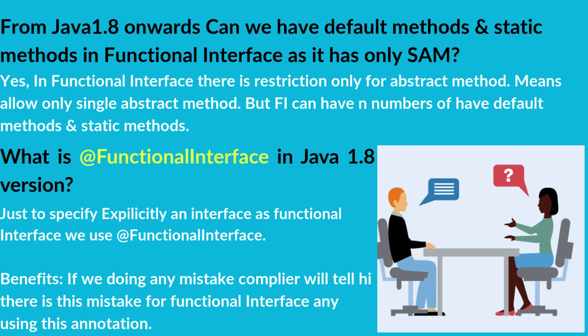From Java 1.8 onwards, can we have default methods and static methods in a functional interface, even though it has only one SAM? Yes — in a functional interface the restriction is only for abstract methods, meaning only a single abstract method is allowed. But it can have any number of default methods and static methods.